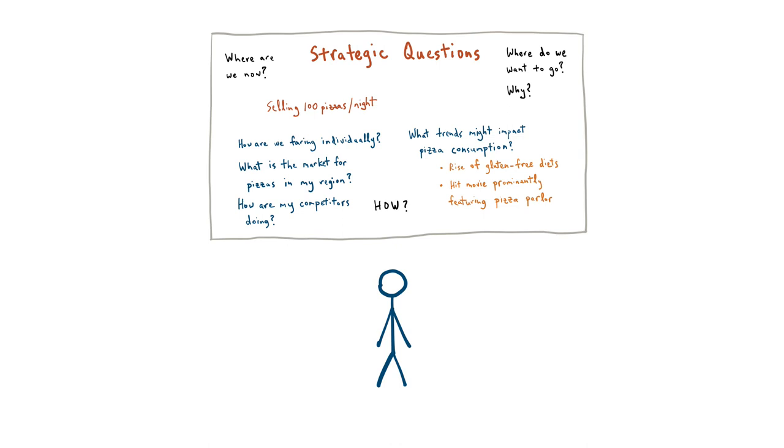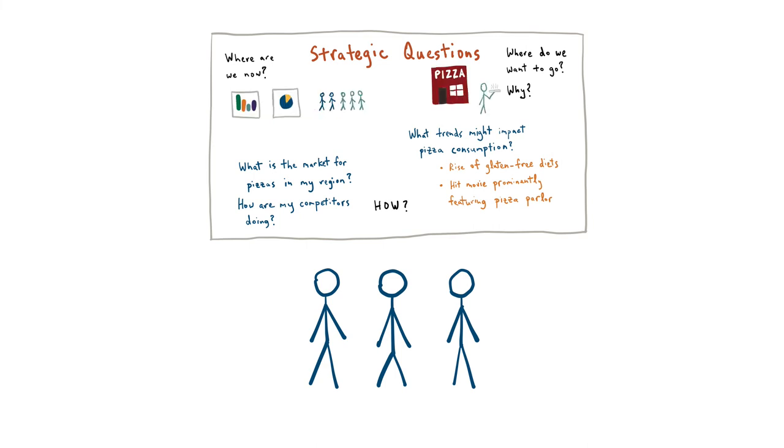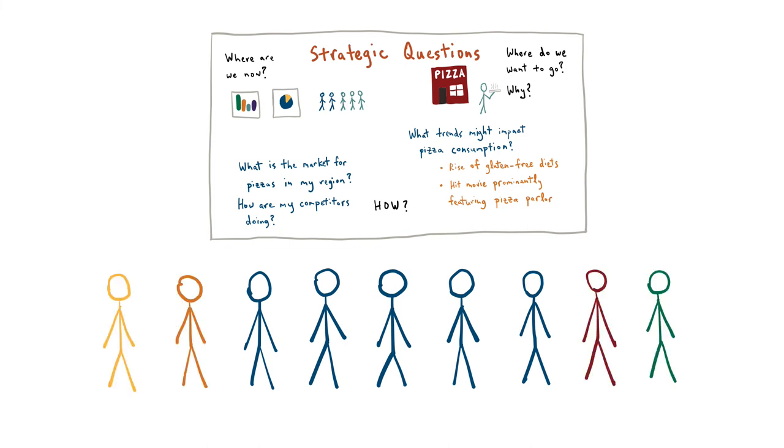You should always involve as many stakeholders as possible in your strategy process. You should also include outside perspectives as a way to counter groupthink. More perspectives lead to better thinking. Those who participate will also feel greater ownership over the outcomes.